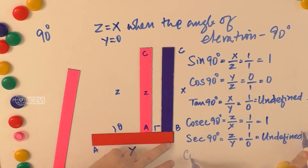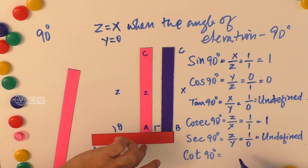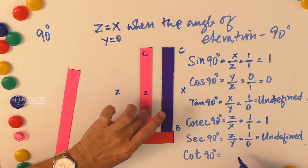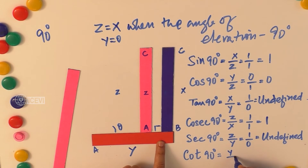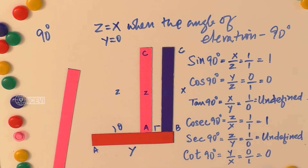Cot 90 degrees equals adjacent by opposite. When theta becomes 90 degrees, the adjacent Y becomes 0 and the opposite X is 1 unit, so cot 90 degrees is 0 by 1, which equals 0.